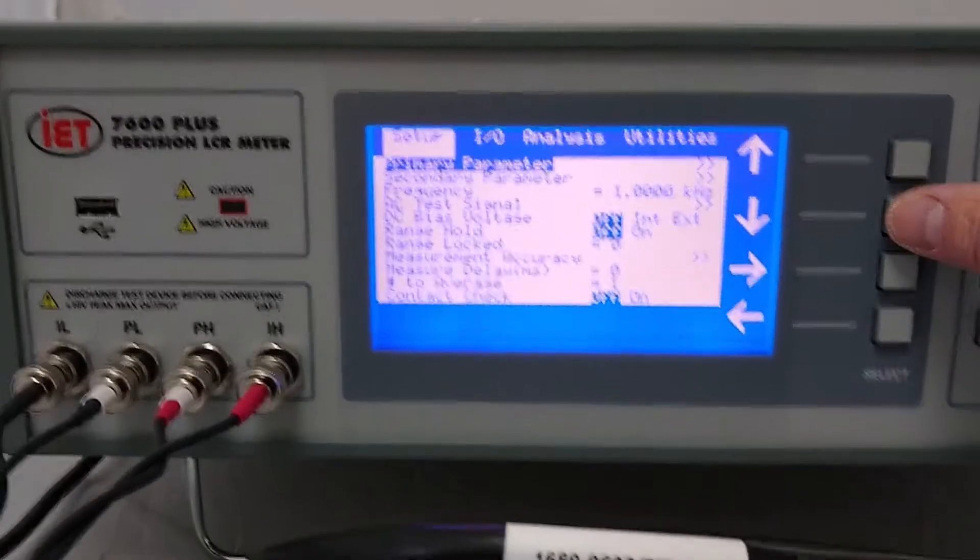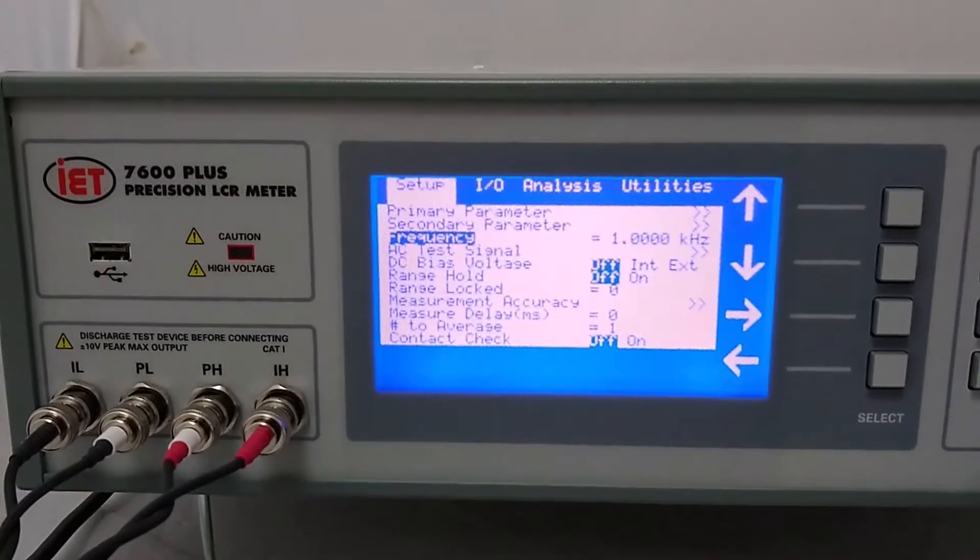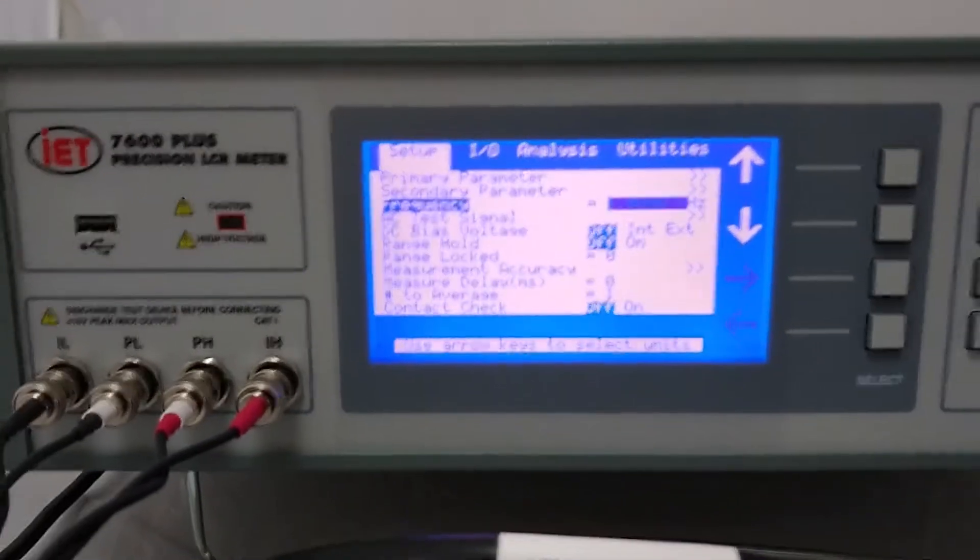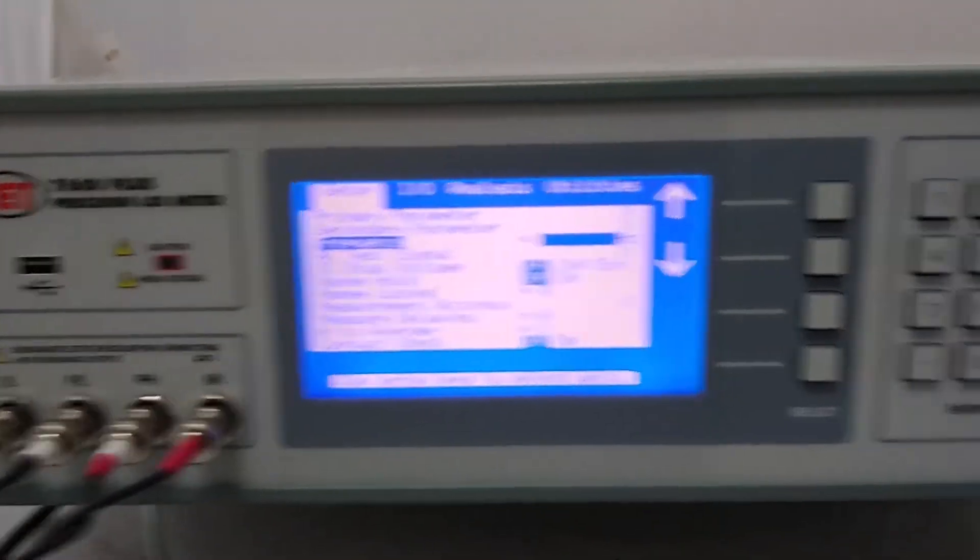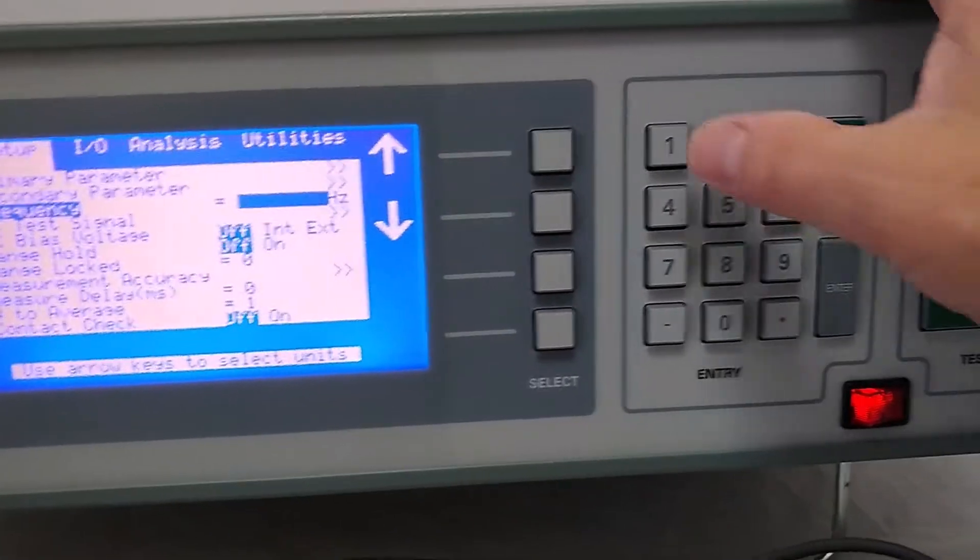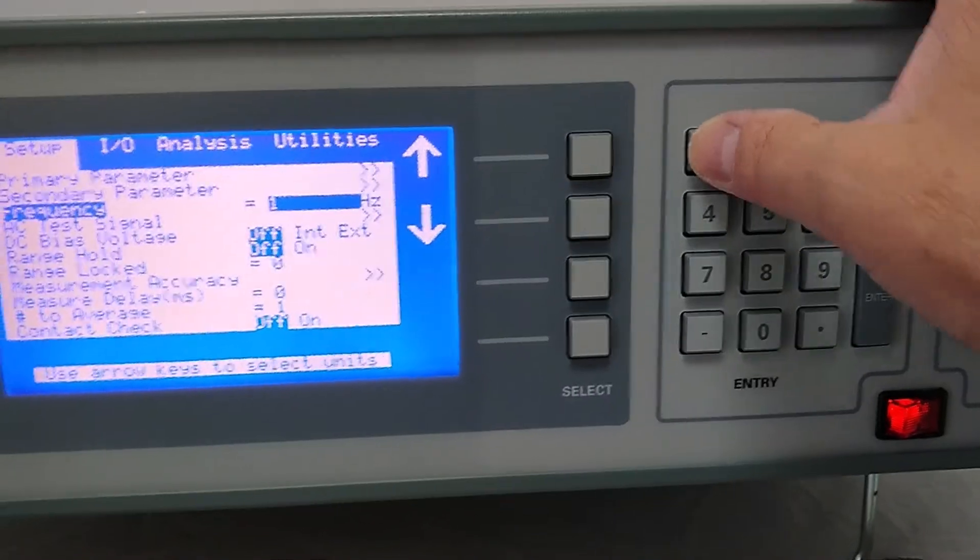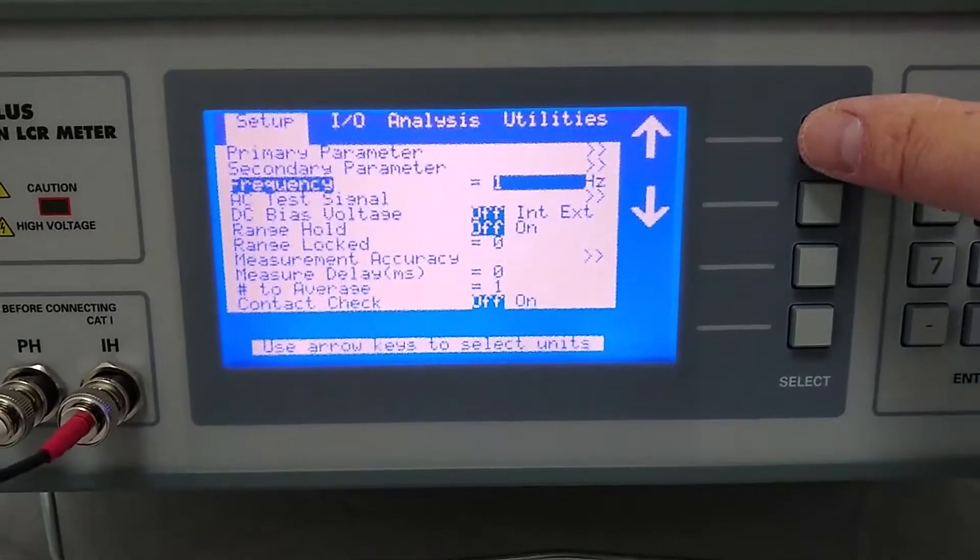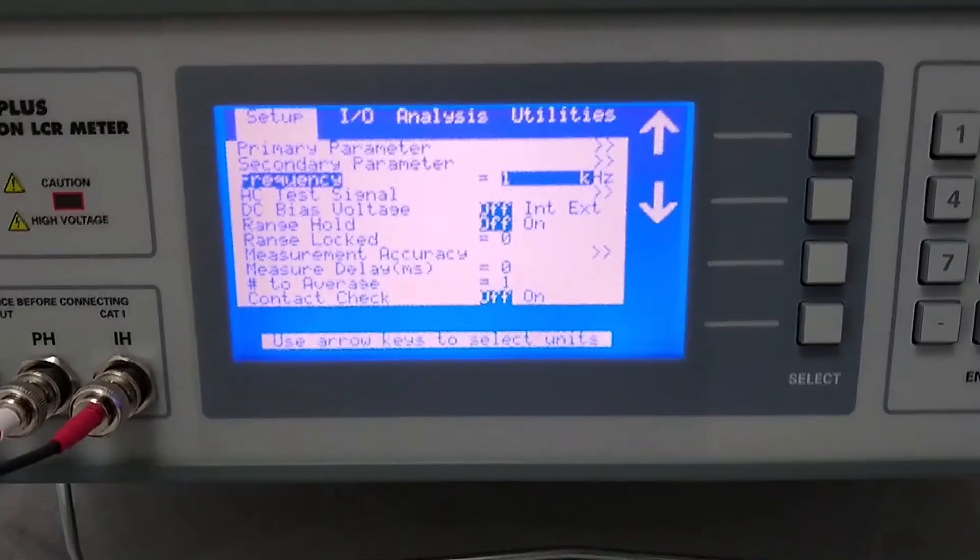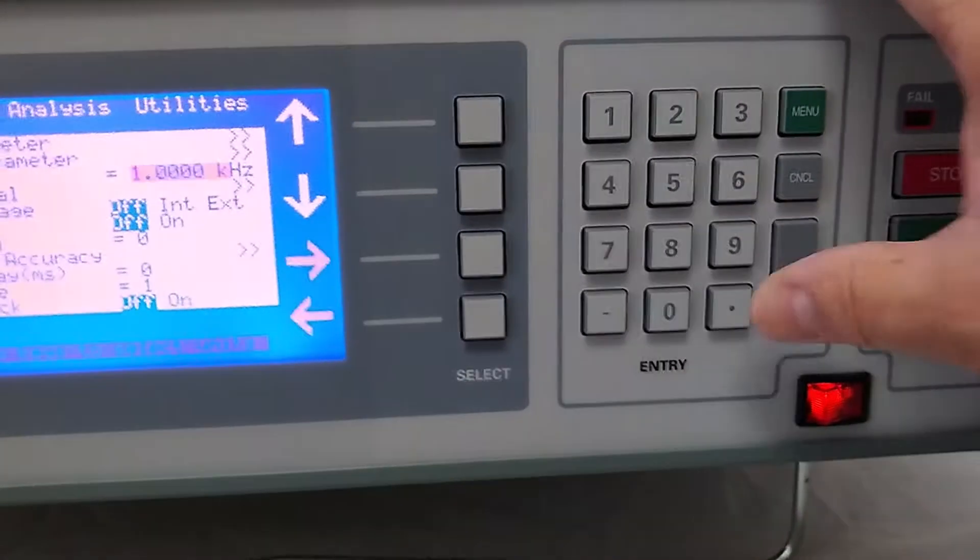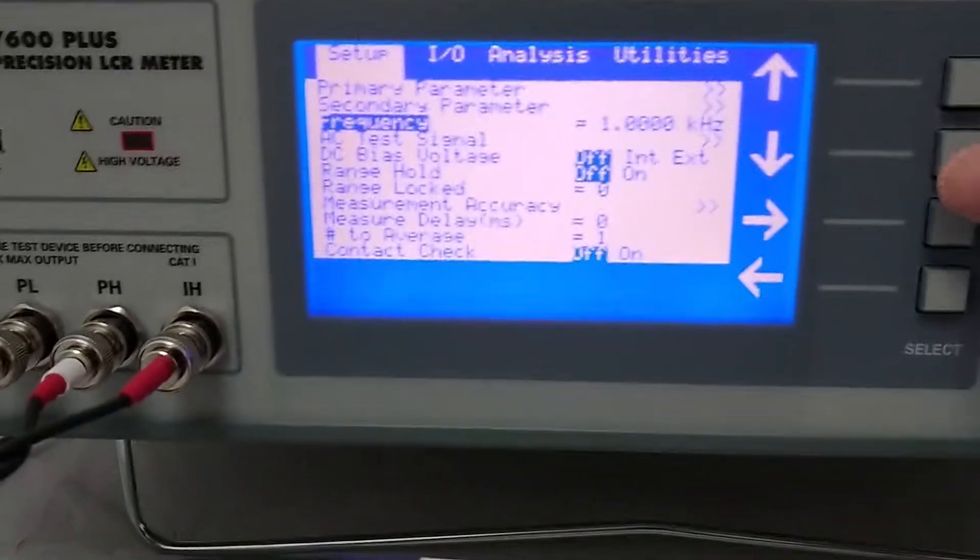From a setup standpoint, the only thing you should really have to do is go down to frequency, enter, and set in the frequency using the keypad. In this case we're just going to enter 1 kHz. 1, and then we can use the up key to enter K, kHz, and press the enter button. It enters in 1 kHz.